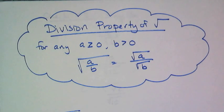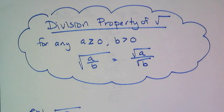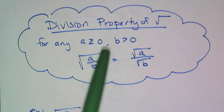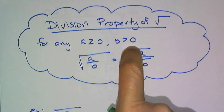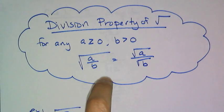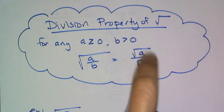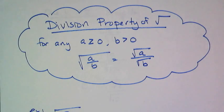And we're going to look at the division property of a radical, and specifically we're looking at square roots. For any a that's greater than or equal to 0, and any b that is strictly greater than 0, the square root of a over b is the same thing as the square root of a over the square root of b.